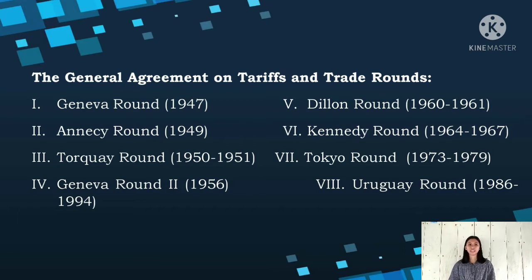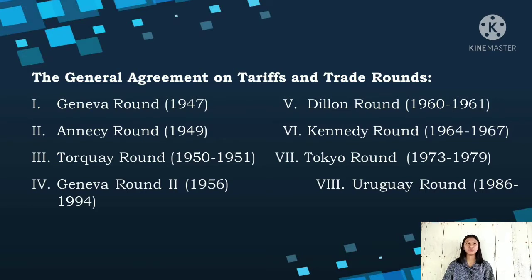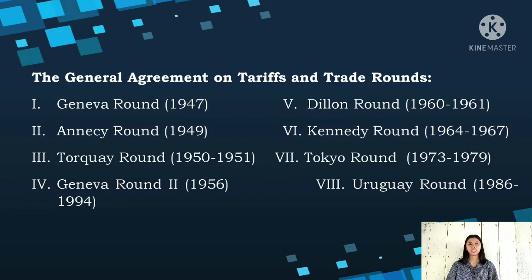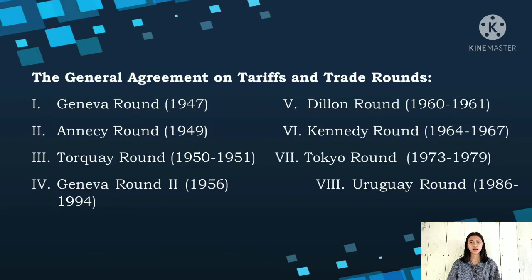The fifth round was the Dillon round, which happened in 1960 to 1961. They reduced bilateral tariffs and the European Economic Community or EEC talks began. The sixth was the Kennedy Round in 1964 to 1967, which continued the reduction of bilateral tariffs and established negotiation rules. The seventh was the Tokyo Round from 1973 to 1979, which continued to reduce bilateral tariffs and included procedures on dispute resolution, dumping, and licensing. The Tokyo Round took the first step in establishing a common understanding and policy framework to address non-tariff barriers among GATT signatories.